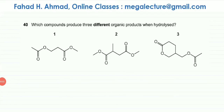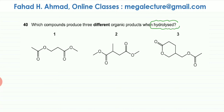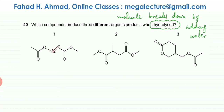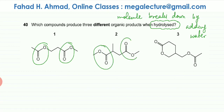The question asks which compounds produce three different organic products when hydrolyzed. Hydrolysis is when a molecule breaks down by the addition of water. There are three molecules shown here, and if you look carefully, there are lots of ester links — a C=O and O bond — here, here, and here.